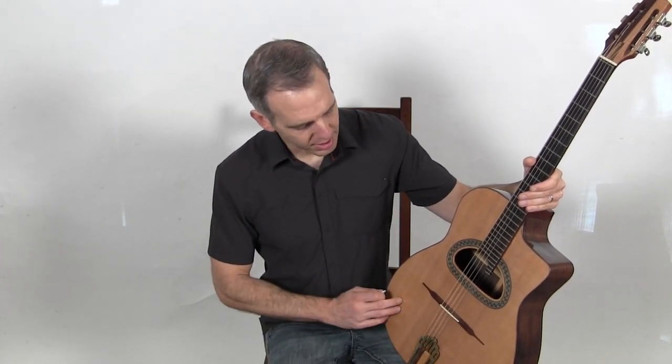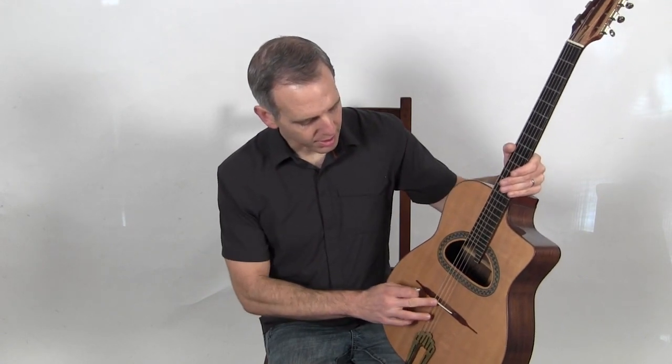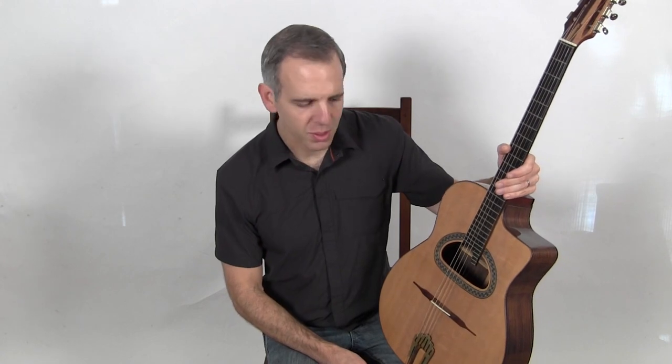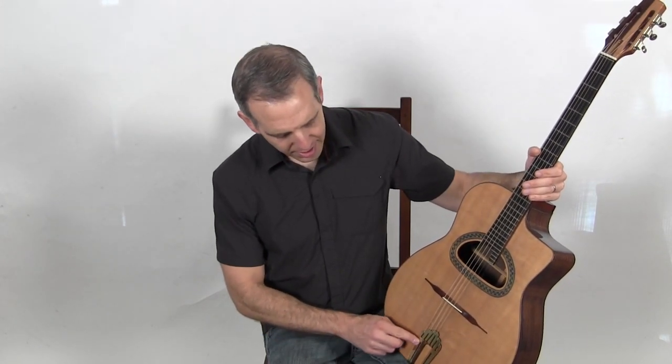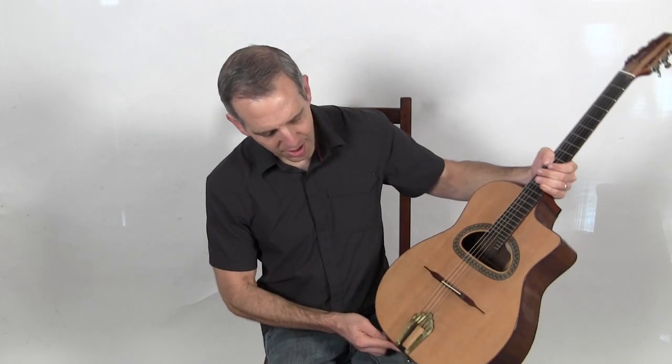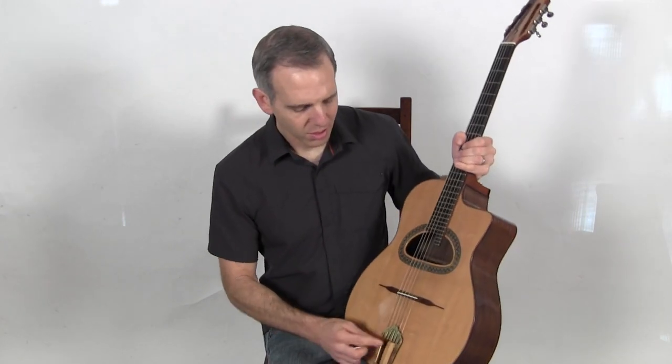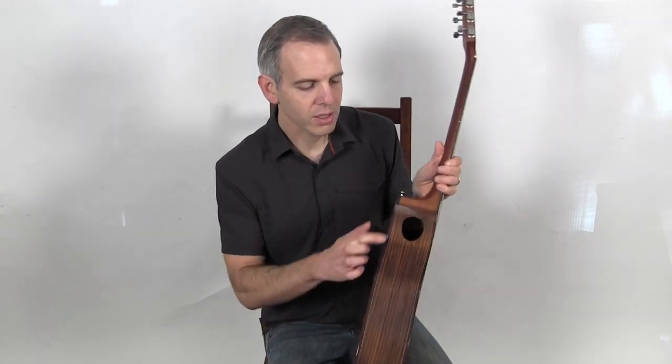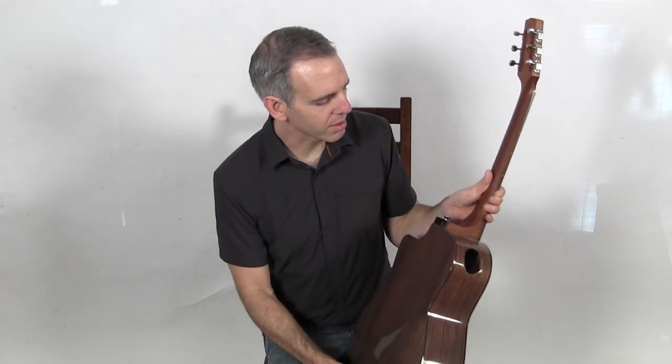This model has a spruce top, a bridge with a saddle on it, which you don't see that often in Gypsy Jazz. Kind of cool. A sort of Michael Dunn style tailpiece with a nice wood inlay. It's Indian rosewood back and sides with a sound port in the side.